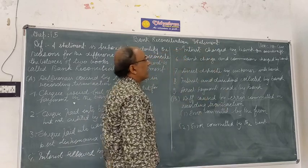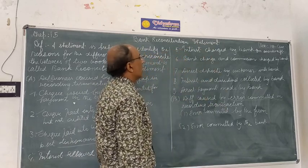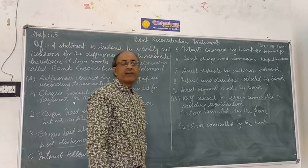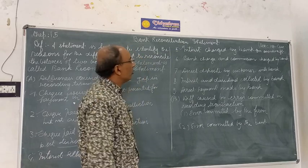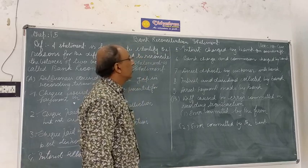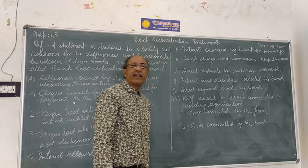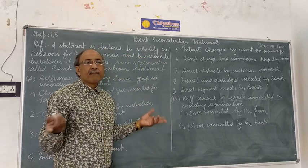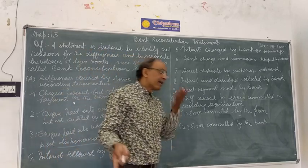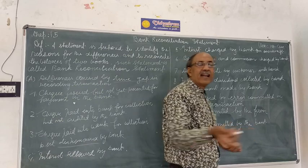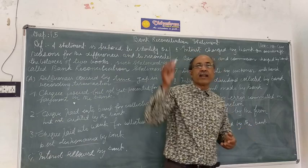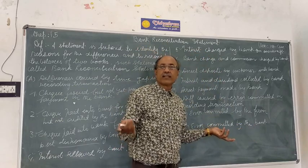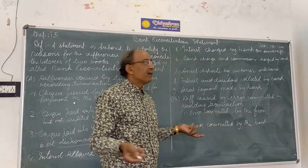Interest charged by bank on ODA — we took a short loan from the bank as an overdraft, and the bank had interest charged on that loan. The bank debited our account for interest, but we did not have that information, so it was not recorded in our cashbook.